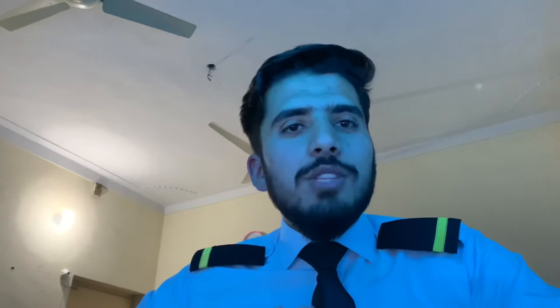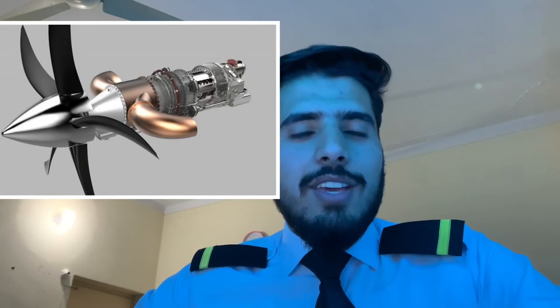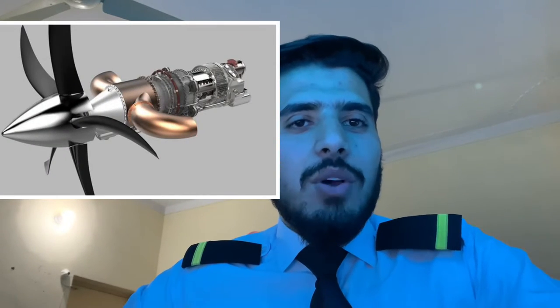Next is the turboprop engine. 'Prop' means propeller, which is why it is called a turboprop engine. The turboprop engine is a combination of a propeller and a gas turbine engine. Both operate in the same manner, having a compressor, a combustion chamber, a turbine, and an exhaust — the only addition is the propeller.